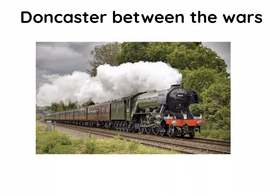The wider context of Doncaster between the wars — the interwar period — was quite unique to the railway and coal industry because those continued to boom. Britain did experience a bit of an economic slump during this period, but the railway industry continued to thrive. The romanticism surrounding the Flying Scotsman and breaking the 100 miles per hour record made this almost like the golden era for Doncaster — a boom time for the town itself.